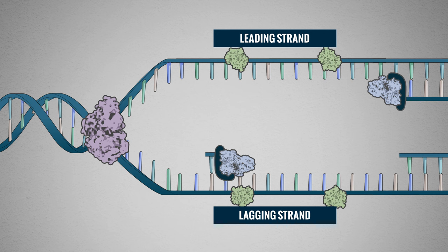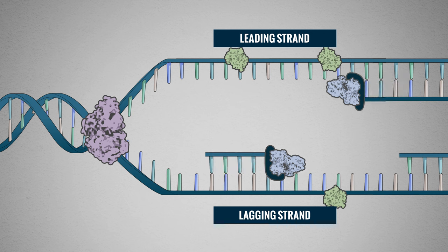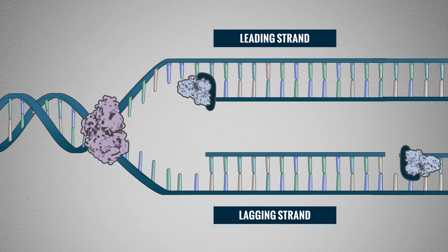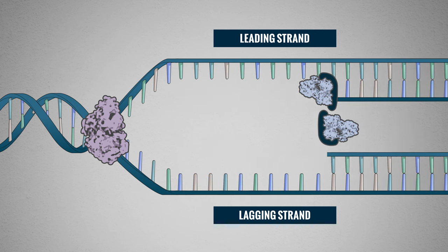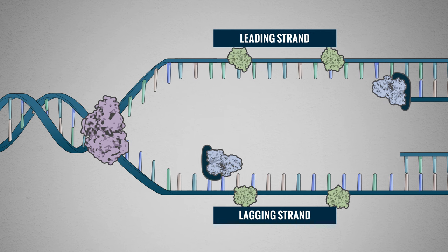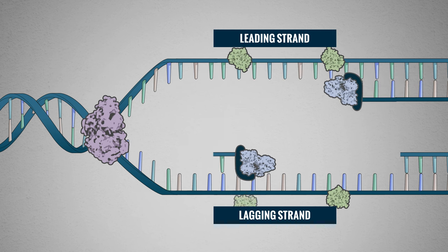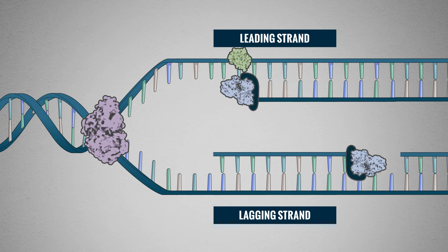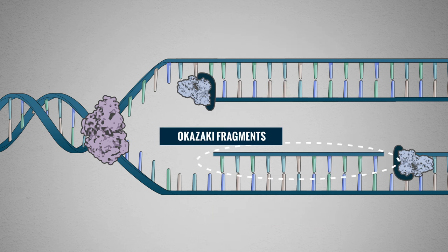Because of the lagging strand's orientation, DNA polymerase III is forced to repeatedly release the DNA strand and slide further upstream to begin extension from another RNA primer. The lagging strand is made discontinuously in short pieces called Okazaki fragments which are later joined together.